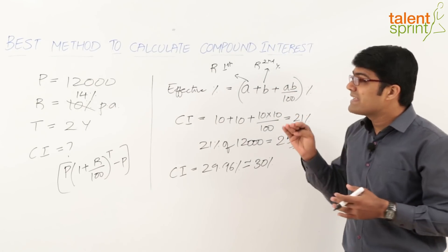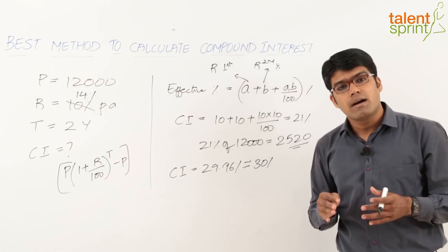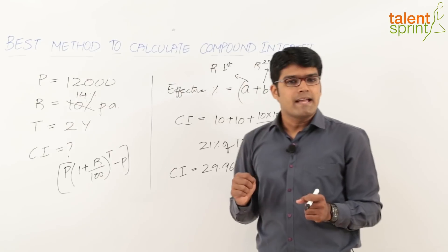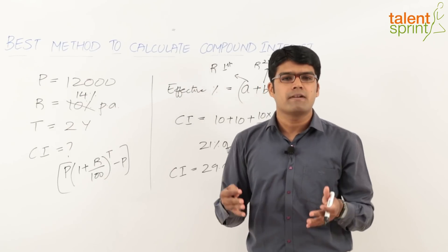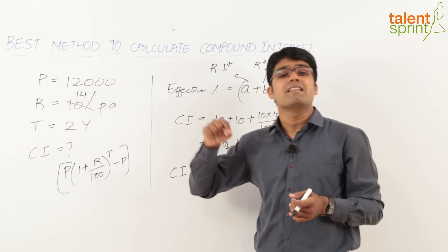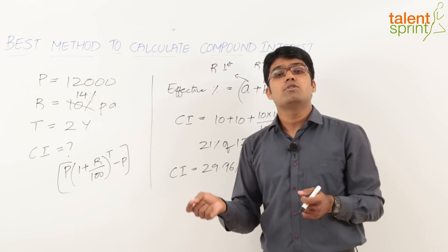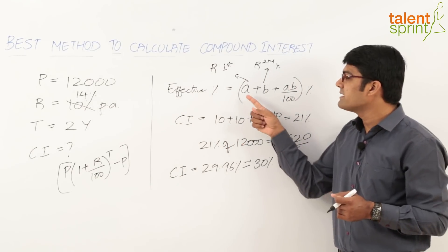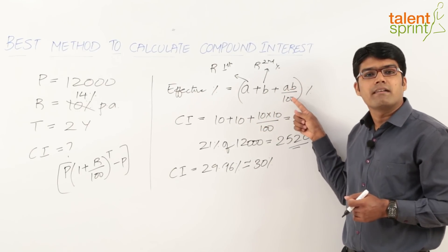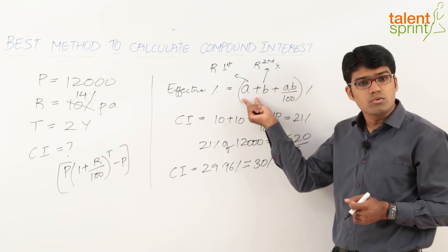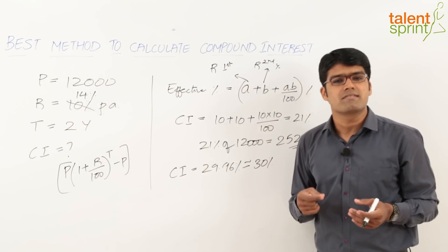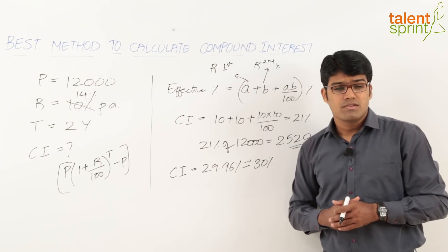An important point: if the rate of interest is different for different years, just substitute the values accordingly. For example, if the rate is 10% for the first year and 12% for the second year, then a = 10 and b = 12. So: 10 + 12 + (10×12)/100 = 22 + 1.2 = 23.2%. The compound interest is 23.2% of 12,000.